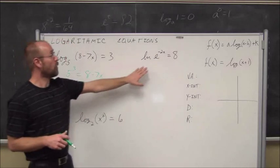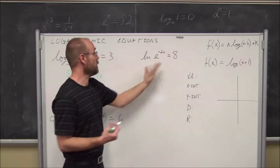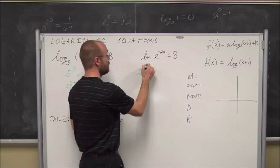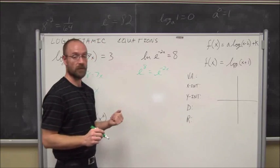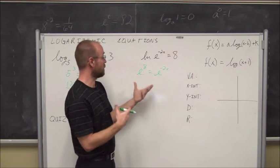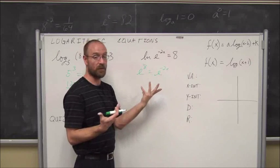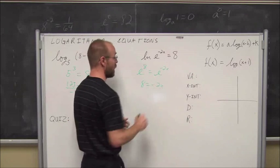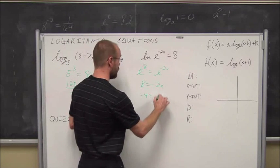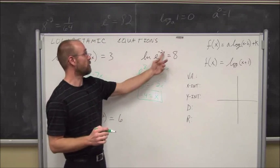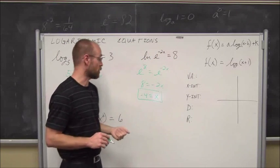For this example, the base is e. Rewriting as an exponent: e to the eighth power equals e to the negative 2x. Using our rules from the exponential section — if the bases are the same, their powers must be the same — so 8 equals negative 2x. Divide both sides by negative 2, and we get x equals negative 4. We can check: negative 4 times negative 2 is positive 8, so e to the eighth equals e to the eighth. That is a true statement.